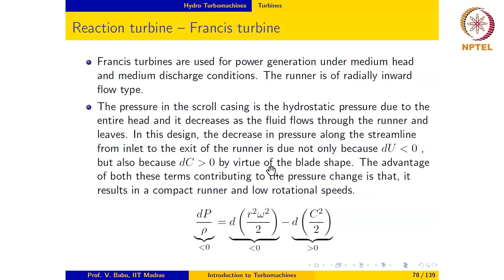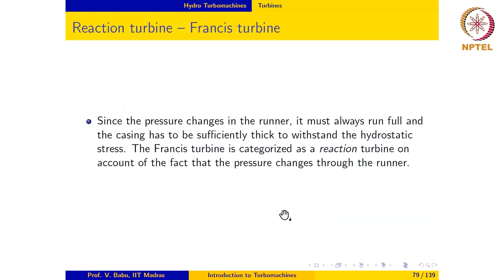Since the pressure changes in the runner from the high value at the scroll casing to discharge pressure which is much lower, it must always run full and the casing on the scroll and other parts of the casing has to be sufficiently thick to withstand the hydrostatic stress. And as we have already mentioned, the Francis turbine is categorized as a reaction turbine on account of the fact that the pressure changes through the runner.